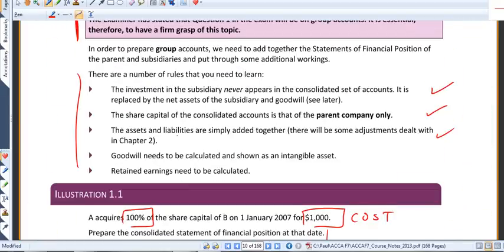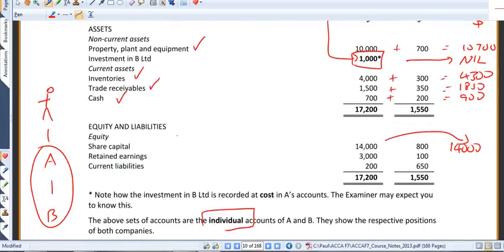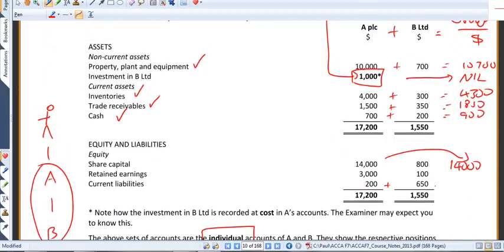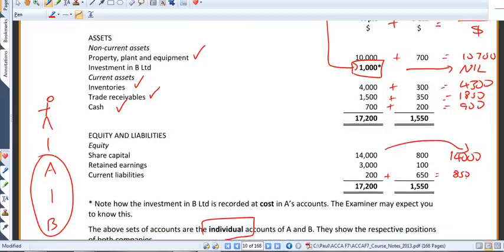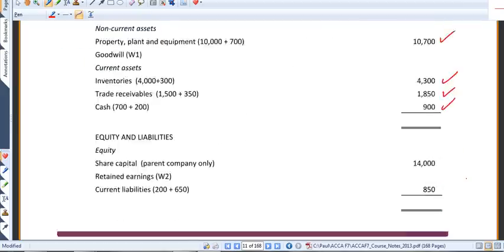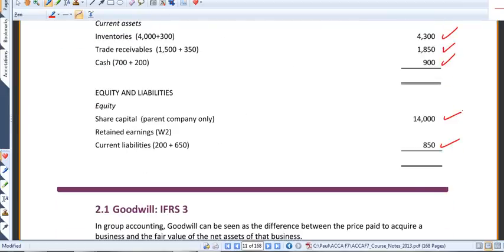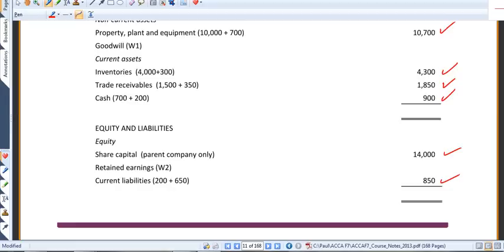Assets and liabilities are simply added together. So, notice that for the liabilities figure, I do add those across. 200 plus 650 does indeed give me 850, again shown over the page.